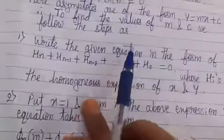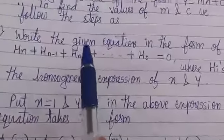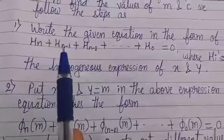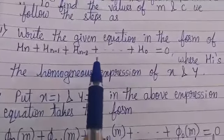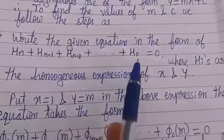To find these values, we follow the following steps. First, write the given equation in the form hₙ + h_{n-1} + ... + h₀ = 0, where all h's are homogeneous expressions of x and y.